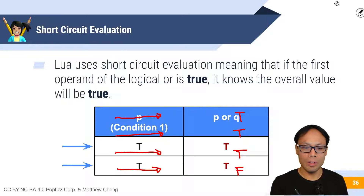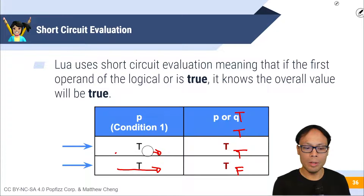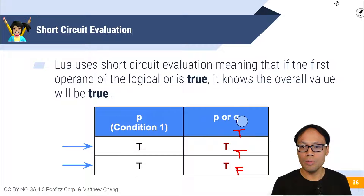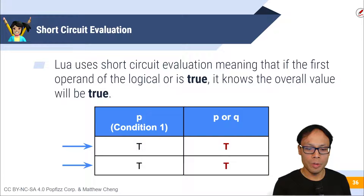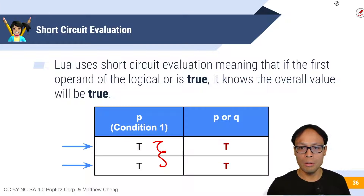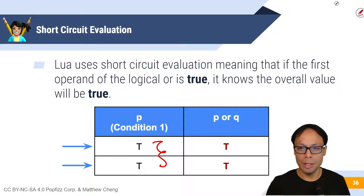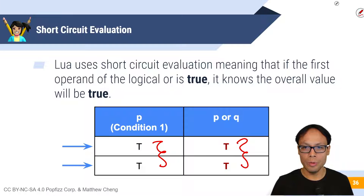Just like the AND, Lua also uses short-circuit evaluation when evaluating the OR. Per our truth table, if Lua sees the first operand as true, then it knows that the entire expression will also be true.